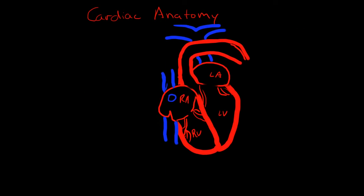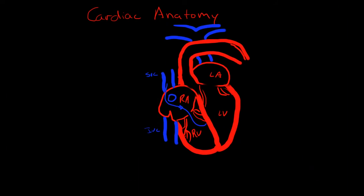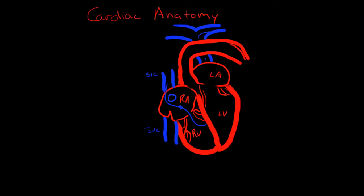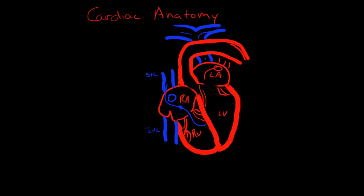The right atrium receives blood from the superior vena cava and the inferior vena cava. This is deoxygenated blood coming from the systemic circulation, which passes through the right atrium into the right ventricle and then is pumped into the pulmonary artery into the lungs where it is oxygenated. That oxygenated blood returns through the pulmonary vein into the left atrium, through the left ventricle, and then out into the systemic circulation.